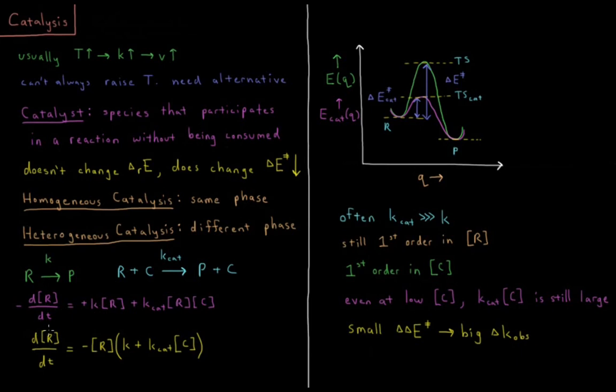So d[R]/dt, the change in the concentration of R with respect to time, is equal to the negative concentration of that reactant times the uncatalyzed rate constant k plus the catalyzed rate constant k_cat times the concentration of our catalyst C.